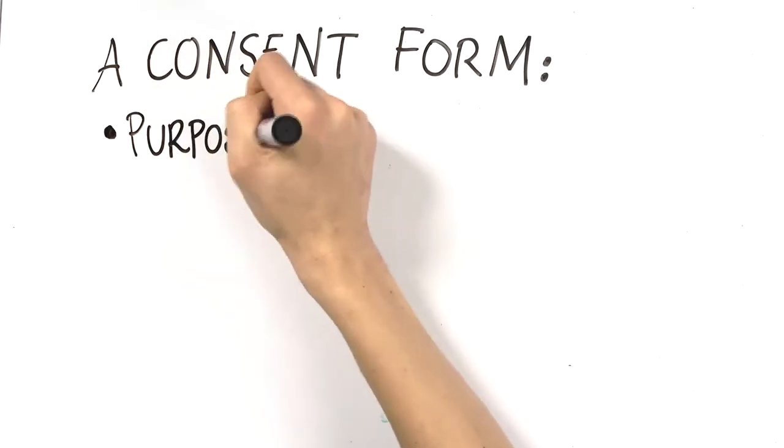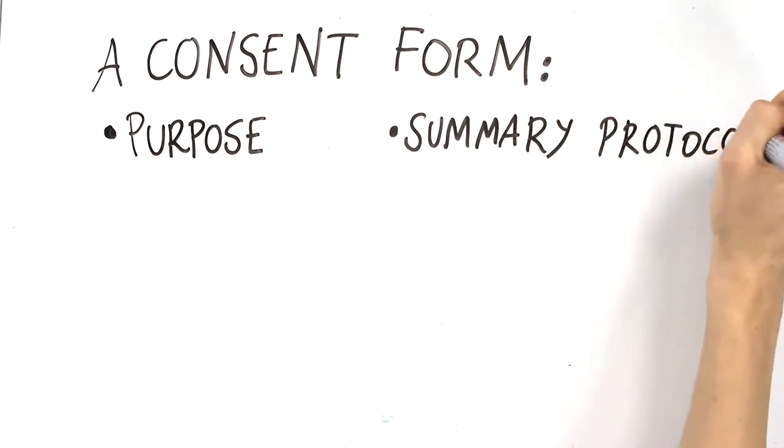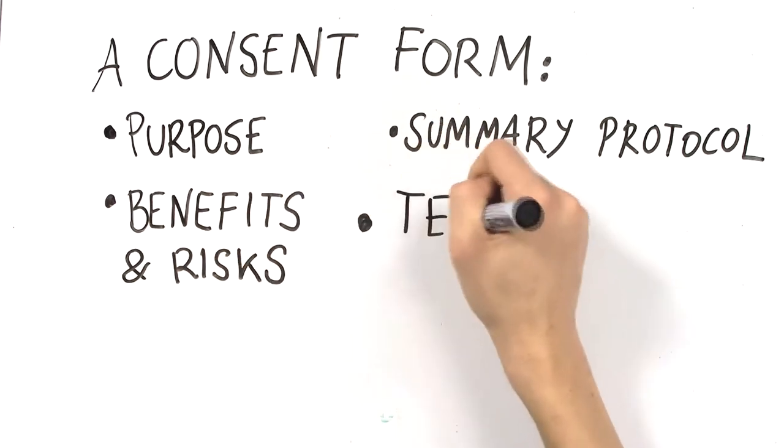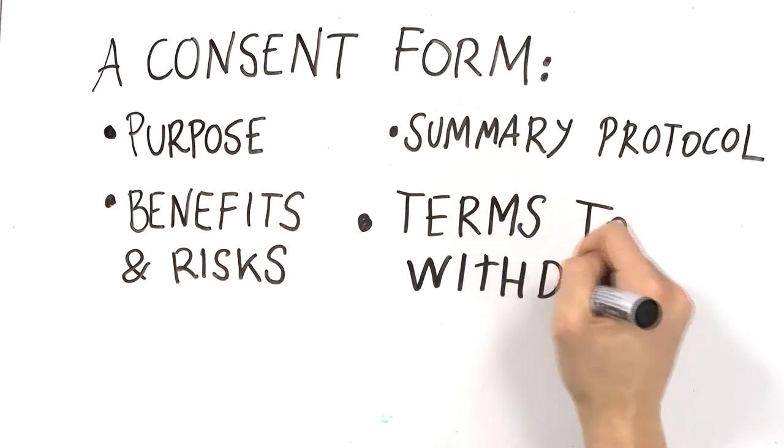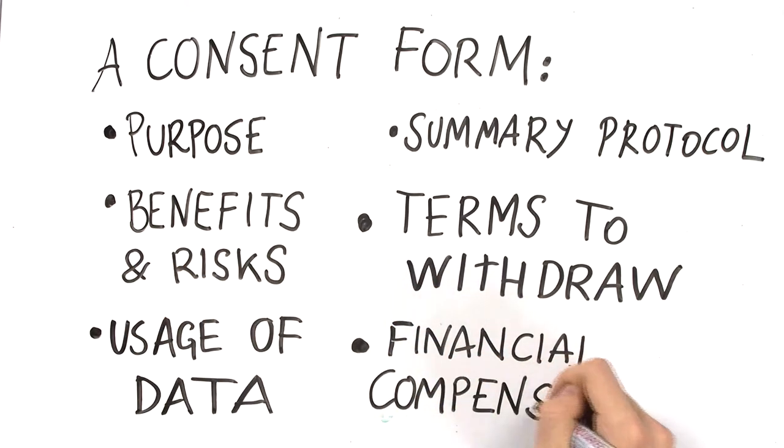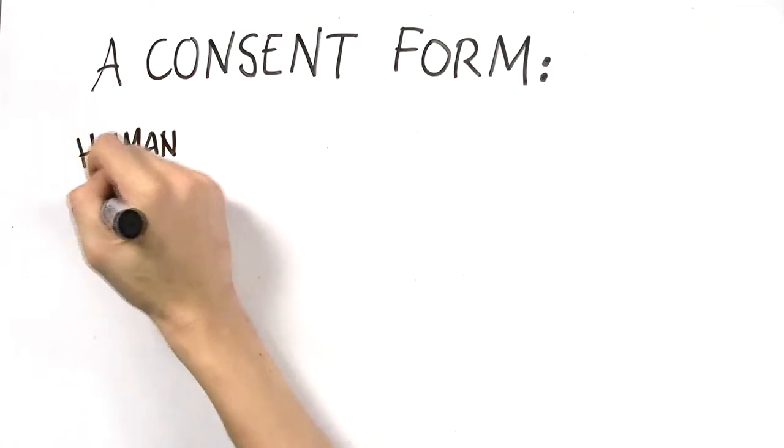In general, a consent form should include: purpose of the study, summary of protocol that can be easily understood by people who have never heard of synthetic biology before, benefits and risks, terms to withdraw, usage of the data, whether there is financial compensation, and contact information.